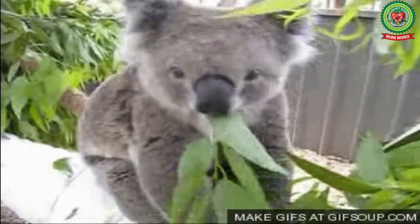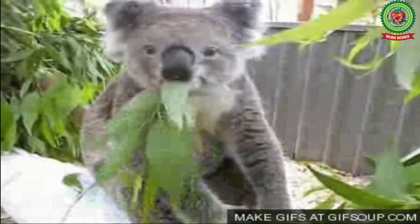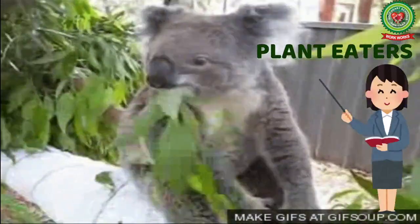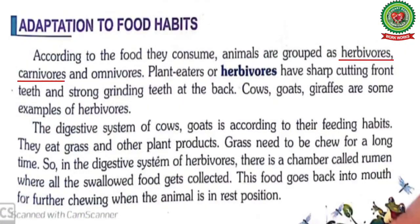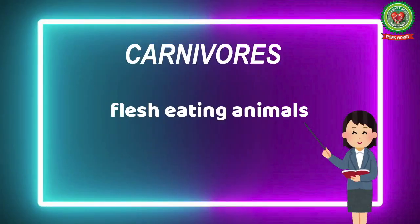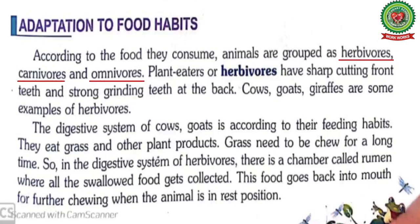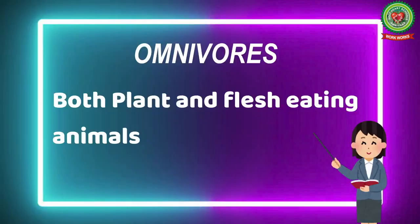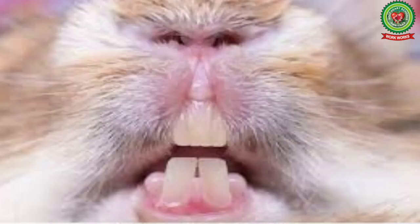Underline the word carnivores. The definition of carnivores is flesh-eating animals. Now underline the word omnivores. The definition of omnivores is both plant and flesh-eating animals.